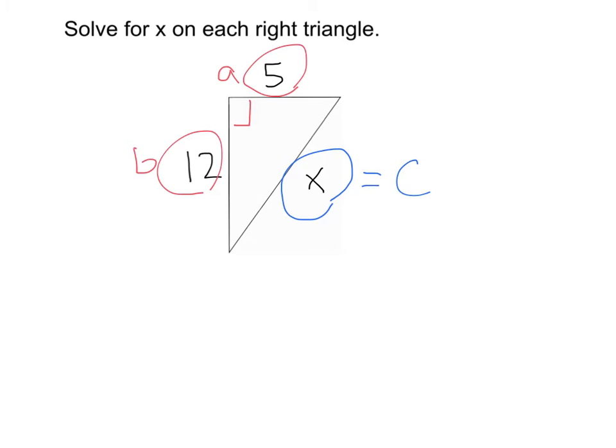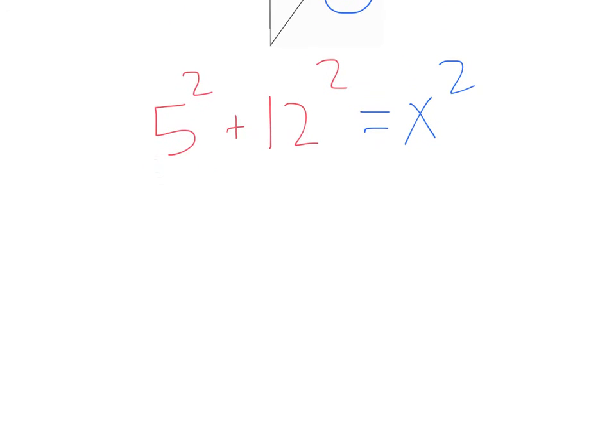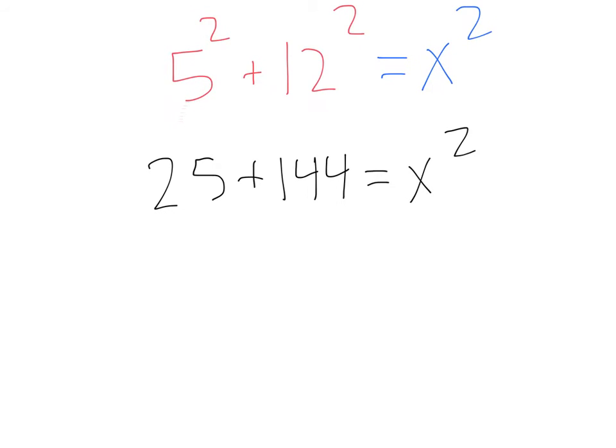A squared plus B squared equals C squared. That'll give us A squared, 5 squared, plus B squared, 12 squared, equals C squared or X squared. Now, let's go ahead and just do some solving. That'll be 25 plus 144 equals X squared. If I do 144 plus 25, that's going to give me 169. That's going to equal X squared.